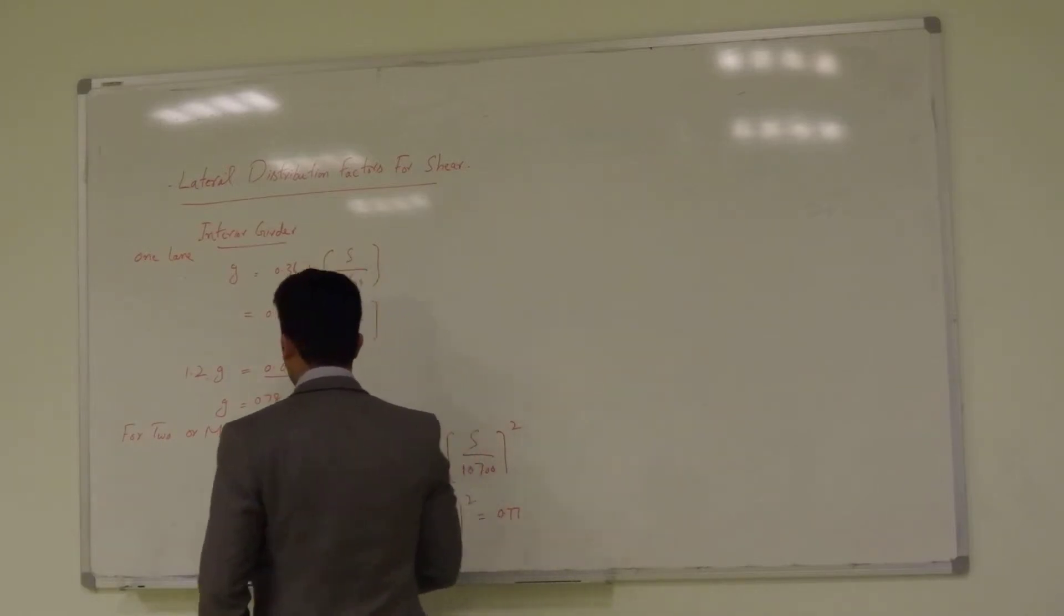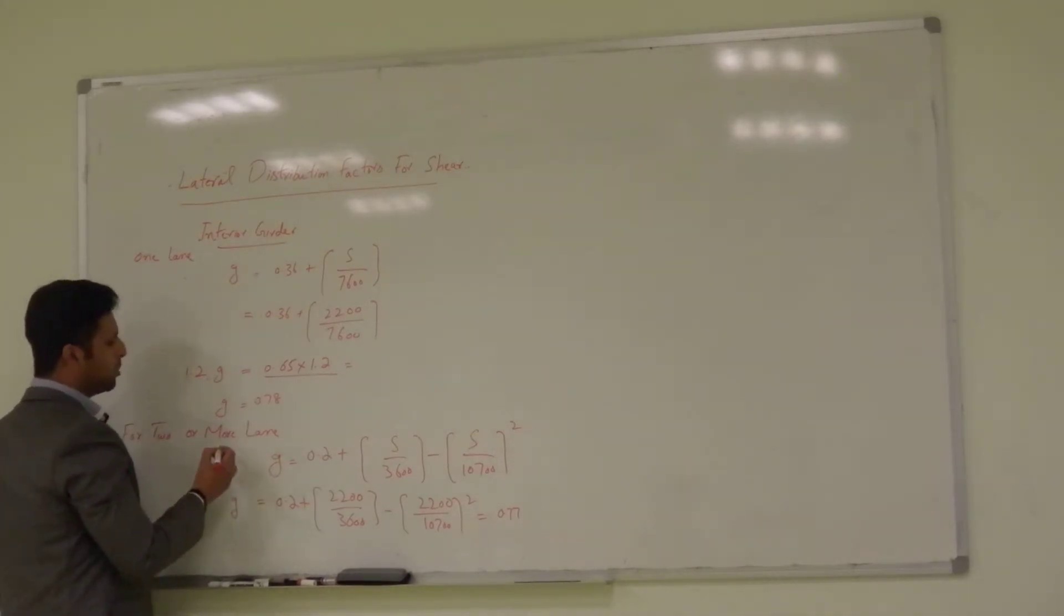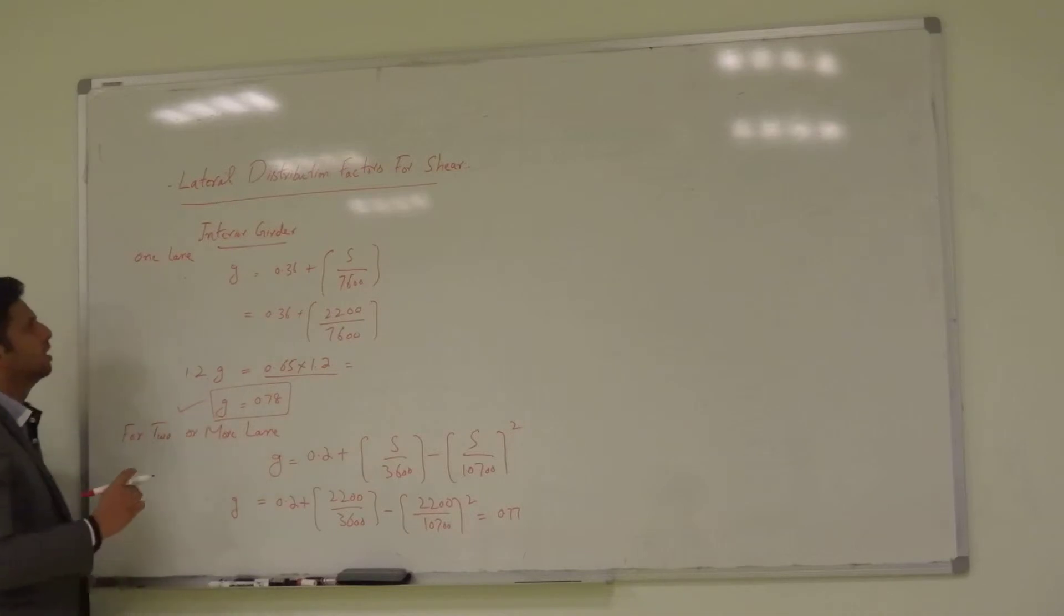So, in both cases the value of g is quite similar but let us use the greater one so g for shear for interior girder is 0.78.